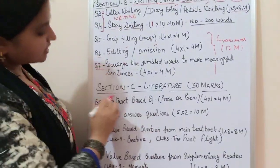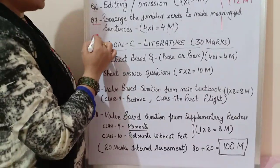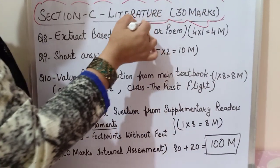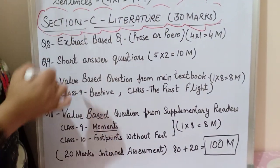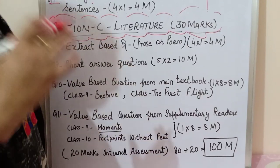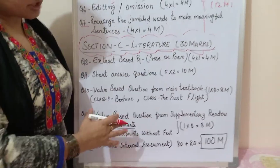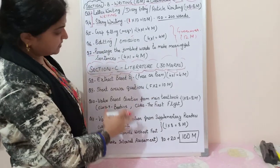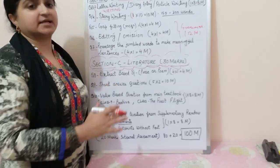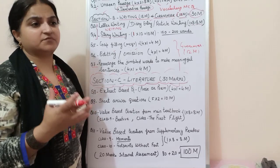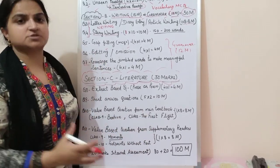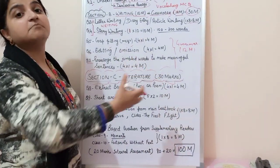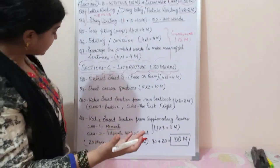The third section is Section C, which is Literature, carrying 30 marks. I always lay emphasis on this portion. We study literature books very attentively and it can give you good marks.